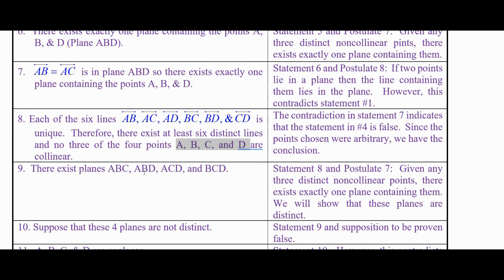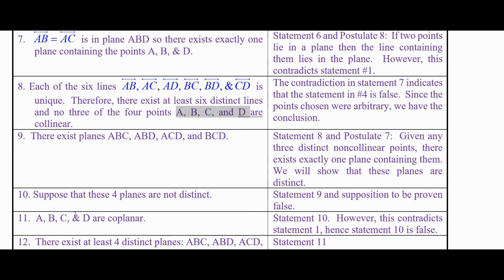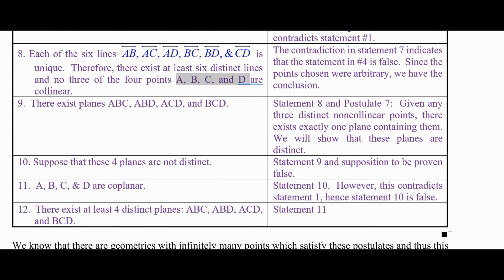This potentially gives four different planes, but what if any of them were the same? Well, if the planes are not distinct then that would make A, B, C, and D coplanar, which is a contradiction. So in fact all four planes are distinct.